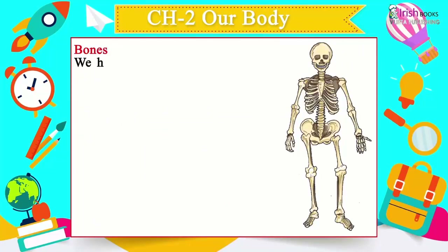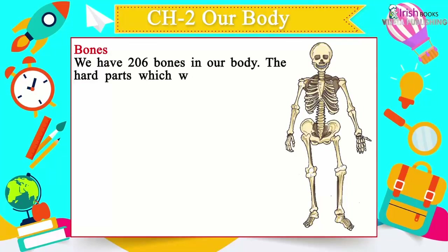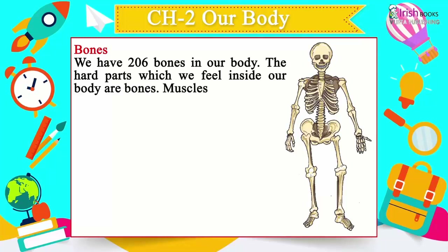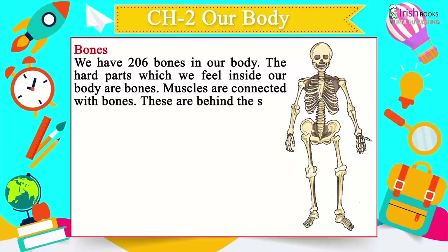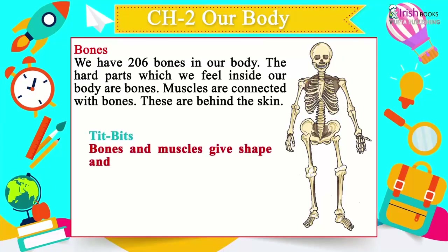We have 206 bones in our body. The hard parts which we feel inside our body are bones. Muscles are connected with bones. These are behind the skin. Bones and muscles give shape and support to the body.